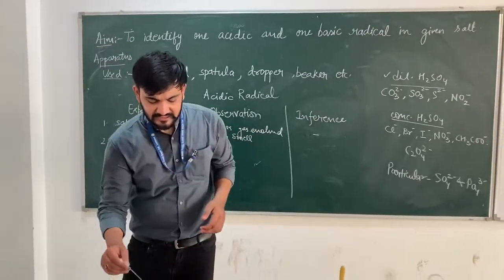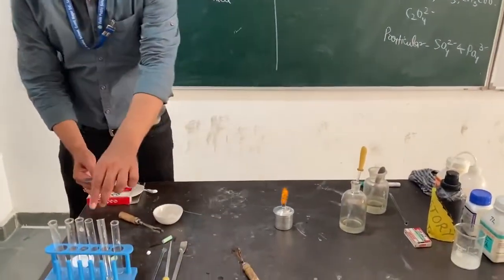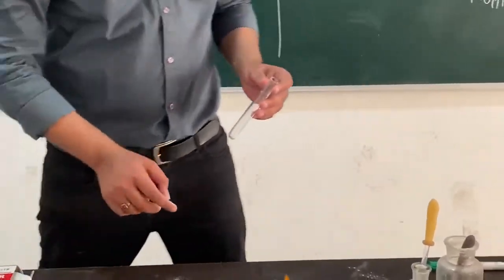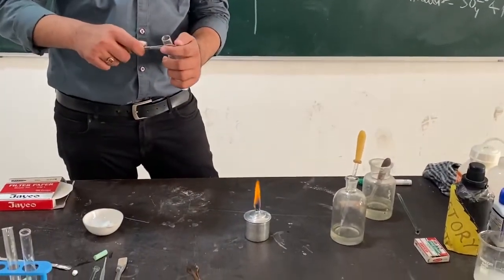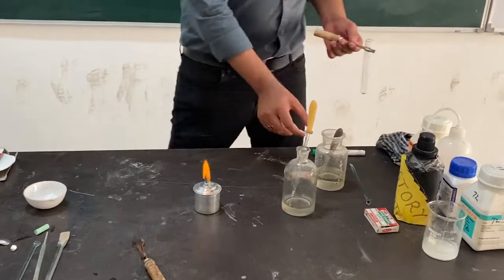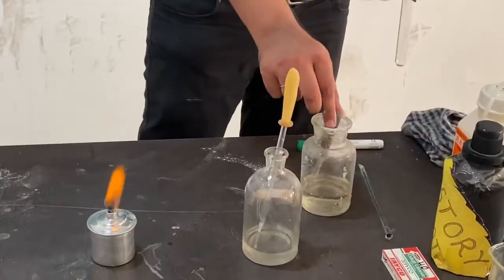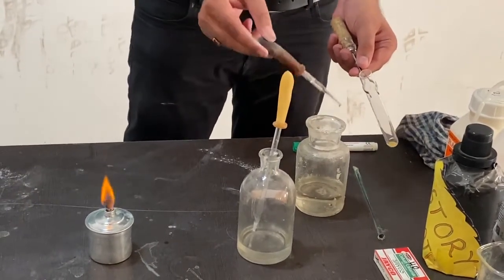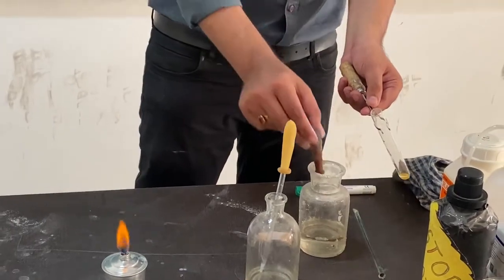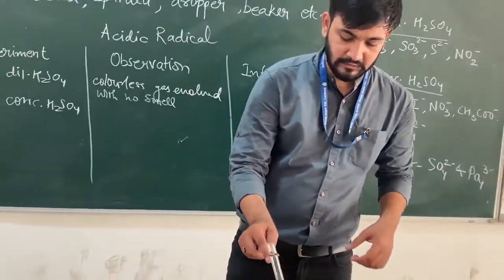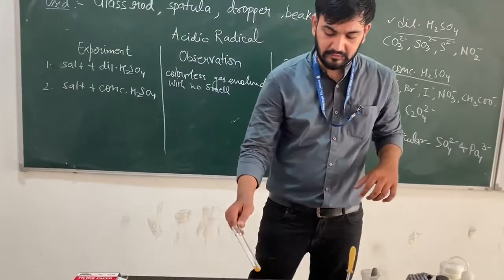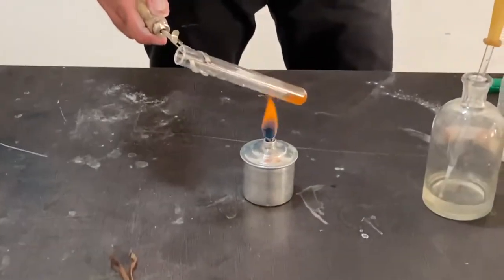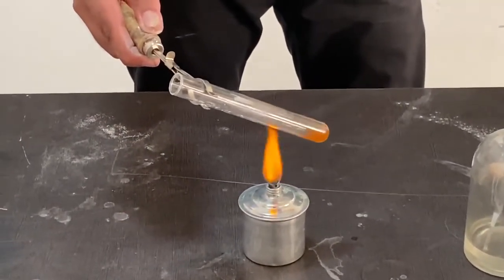Now we are moving to the second step. Again, take a small amount of salt in a dry test tube. Use a test tube holder to hold the test tube. Add concentrated H₂SO₄ to the salt. You have to use H₂SO₄ very carefully, and then heat the test tube in a very gentle manner.